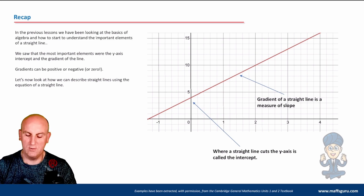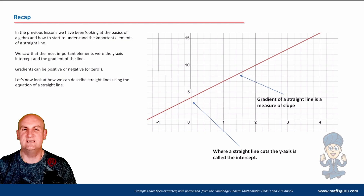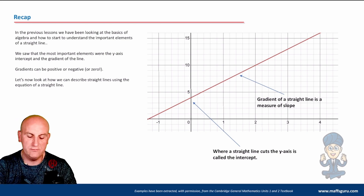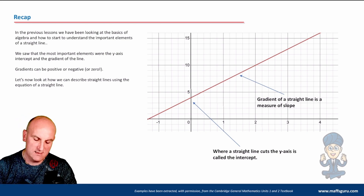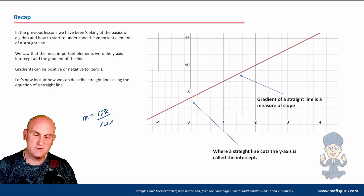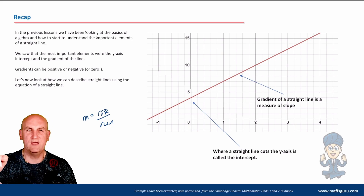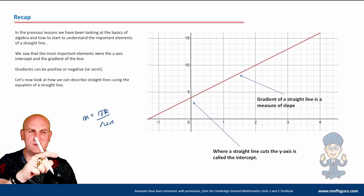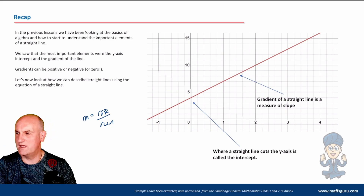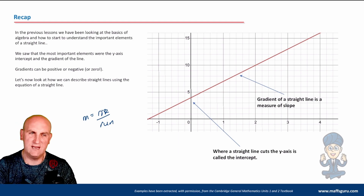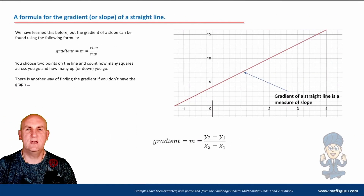We know from year nine that gradient equals rise over run. But I get really confused with that minus sign. When we have gradient — let's call it m — equal to rise over run, you've always got to work out whether you're going across and then down or across and then up, and that minus sign I sometimes forget.